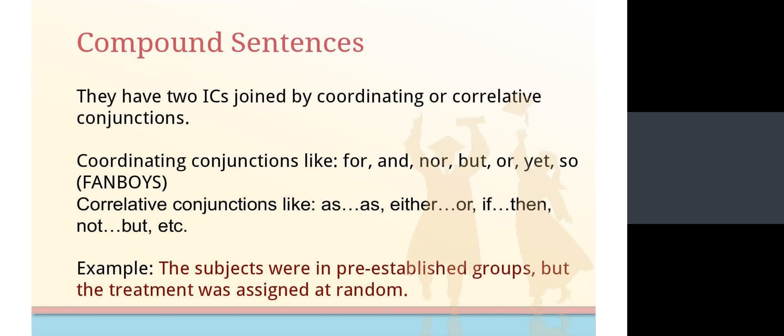The second type of sentence puts together two independent clauses or ideas and joins them using a coordinating conjunction, like the ones known as the FANBOYS or correlative conjunctions. It is possible to understand each independent clause separately. However, this sentence structure relates them so that their meanings are associated to express a relationship — in this case, a relationship of opposition.